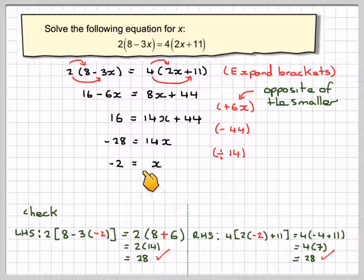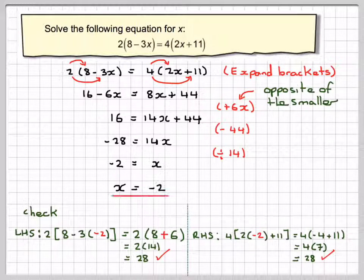Now, it has come out that minus 2 is equal to x. It's okay to leave it like that, but it might be preferable to write it as x is equal to minus 2. Notice that all the equal signs are in a straight line.